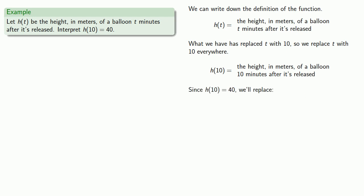Now we're told that h(10) = 40. So equals means replaceable. So we'll replace h(10) with 40. And we get our statement: 40 is the height in meters of a balloon 10 minutes after it's released. Now this is a valid interpretation of our notation, but we'll rewrite this so it sounds more natural.